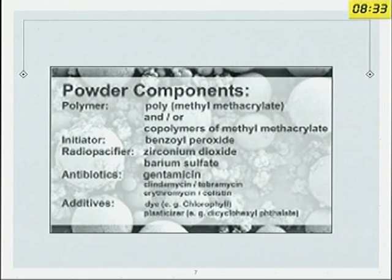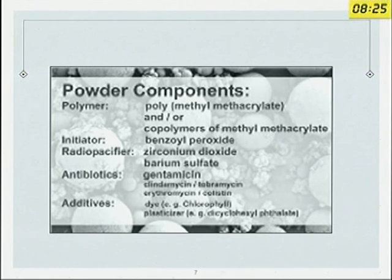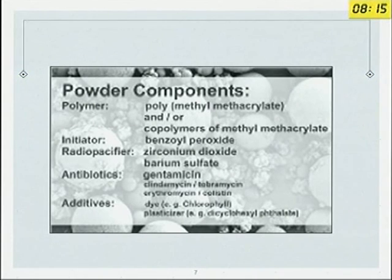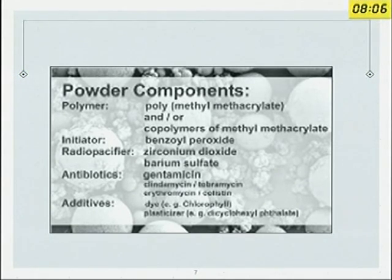The powder is the polymer — methyl methacrylate — with an initiator which starts off your reaction, a radio-opacifier so you can see it on X-ray. Early cements did not have a radio-opacifier. There are some controversies about whether the radio-opacifier alters the inherent properties, but most come with it now — either zirconium or barium. Some cements also come with antibiotics; you choose yours depending on preference, along with some additives.